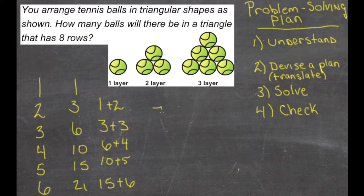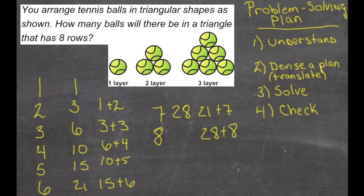Seven rows will be twenty-one, plus seven, or twenty-eight. And eight rows will be twenty-eight, plus eight, which is thirty-six.